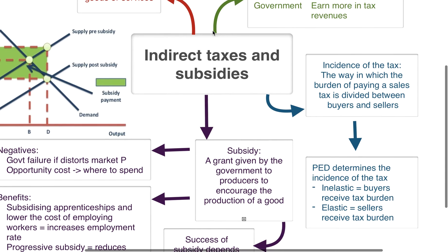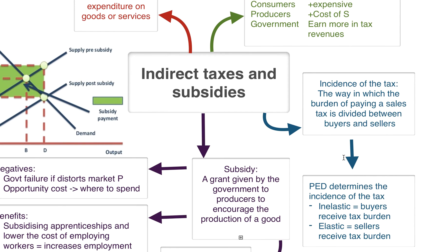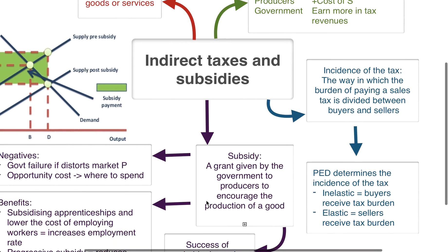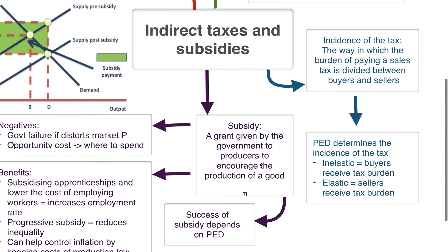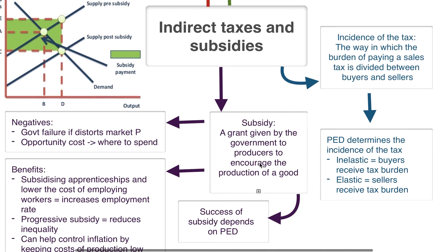So that's taxes covered. Now we're going to look at subsidies. What is a subsidy? It's a grant given by the government to producers to encourage the production of a good or service — when the government gives a firm money so they can try and increase output.